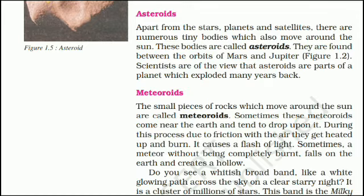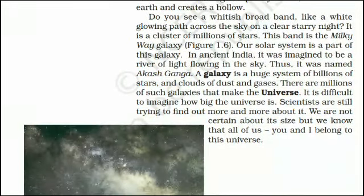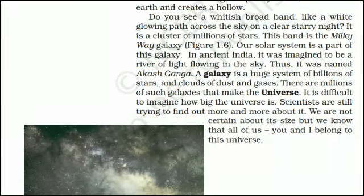Meteoroids: The small pieces of rocks which move around the Sun are called meteoroids. Sometimes these meteoroids come near the Earth and tend to drop upon it. During this process, due to friction with the air, they get heated up and burn, causing a flash of light. Sometimes a meteor, without being completely burnt, falls on the Earth and creates a hollow.